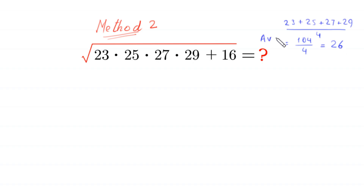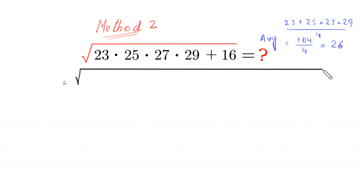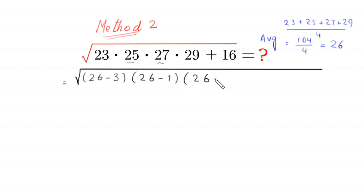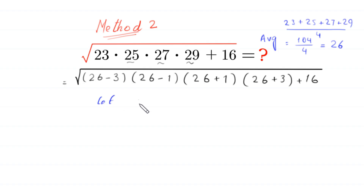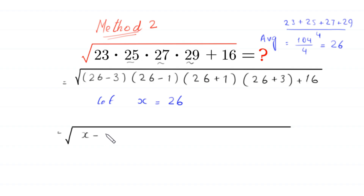So the average of these four numbers is 26. We let x=26 and rewrite the expression as square root of (26-3)(26-1)(26+1)(26+3)+16.